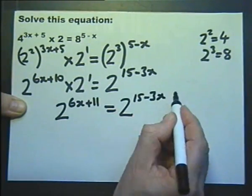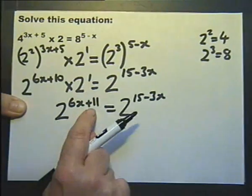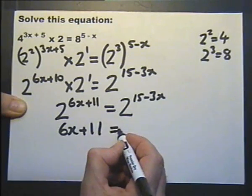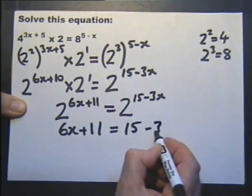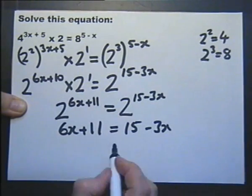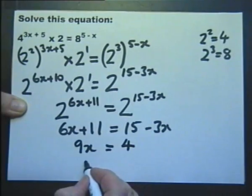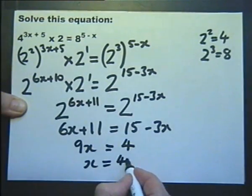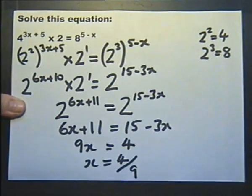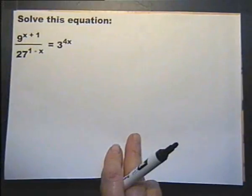Now we've got to a situation where they're both 2 raised to a power. Therefore these powers must be the same. So let's write them down as being equal and then solve this equation. Add 3x to both sides, subtract 11 from both sides, divide both sides by 9, and we have solved the equation, working out the value of x as 4 ninths.